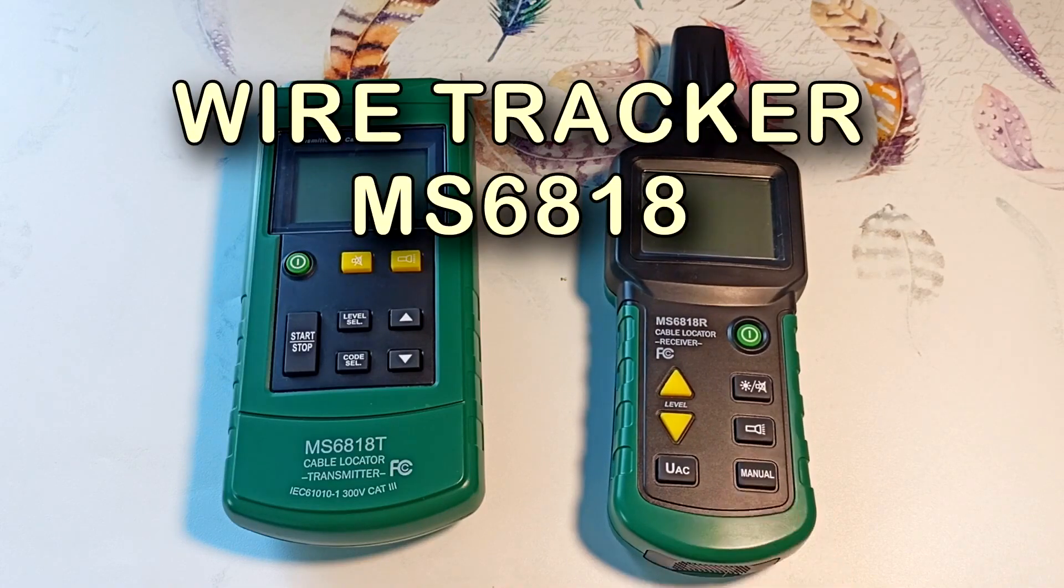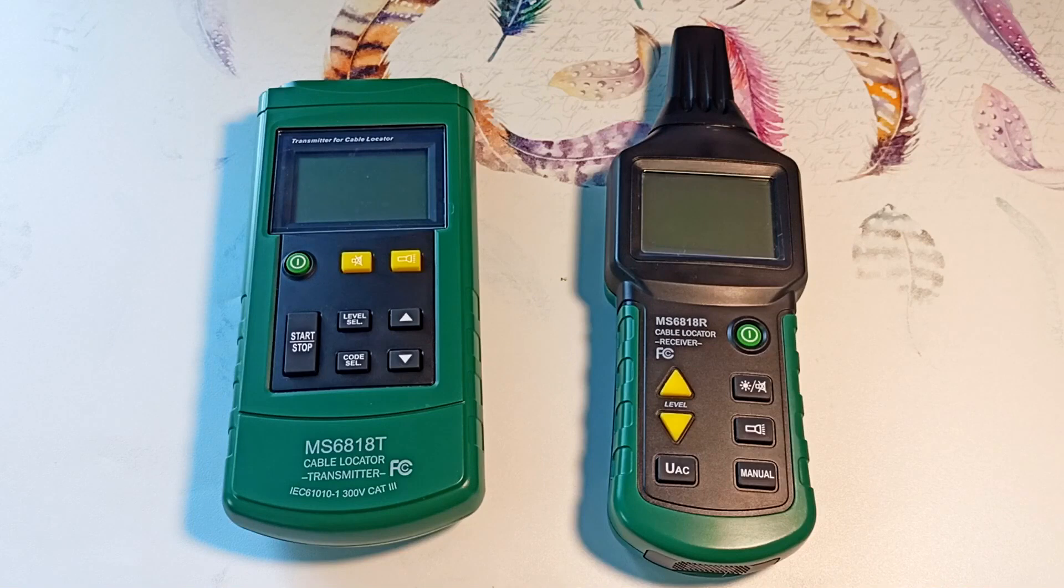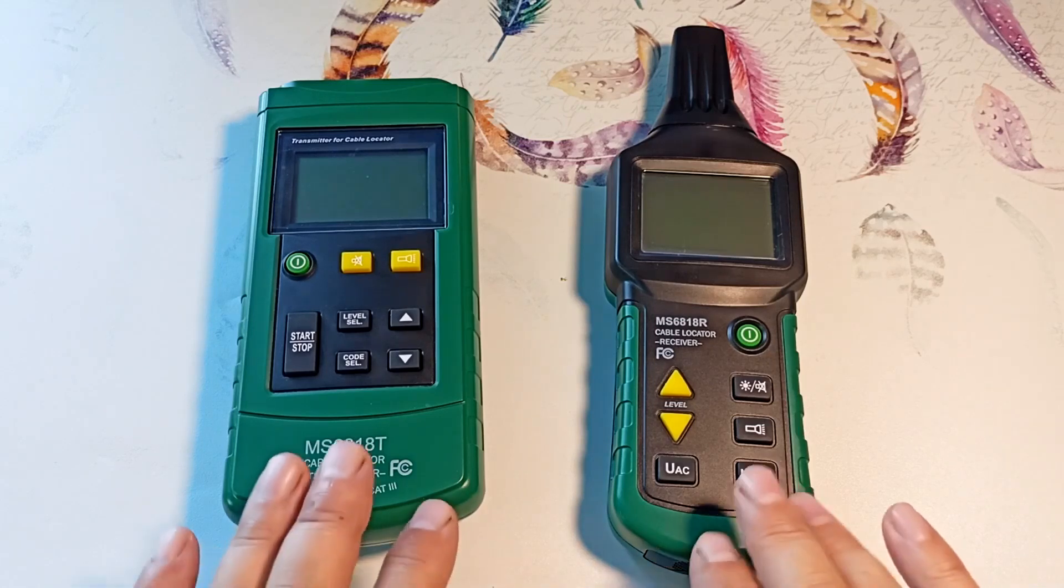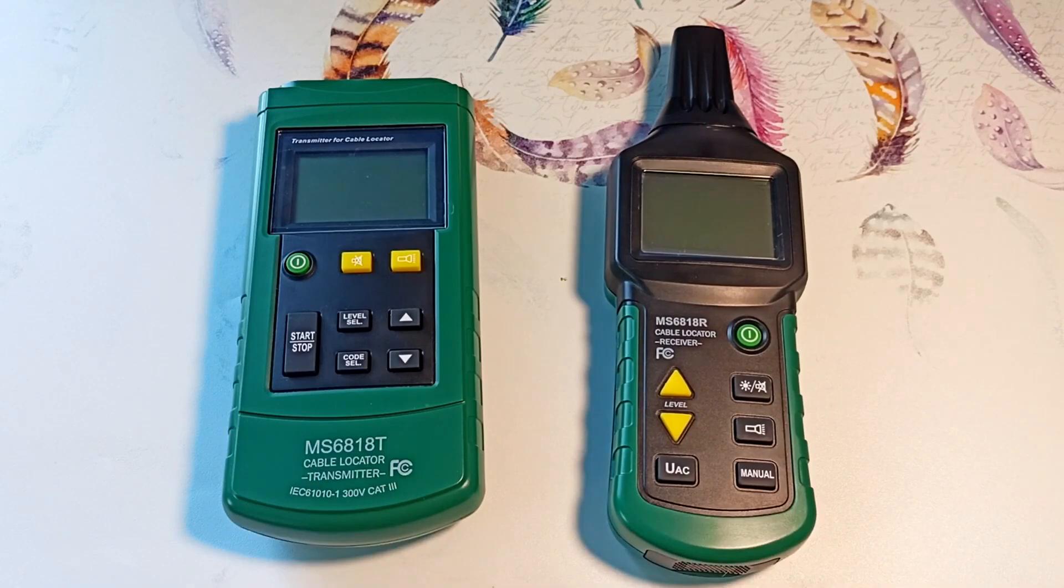It allows you to search for wiring at a depth of 0.5 meters with a 2-pole connection and up to 2 meters with a single-pole connection. The actual detection depth depends on the material in which the wiring is located and the measurement conditions. This is one of the best wiring finders for little money.